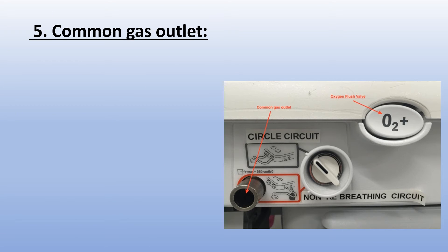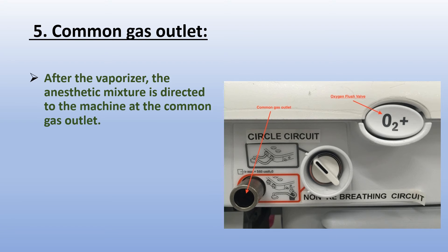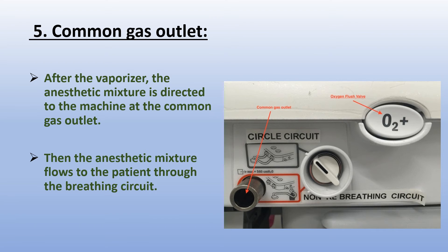The fifth component is the common gas outlet. After the vaporizer, the anesthetic mixture is directed to the machine at the common gas outlet. Then the anesthetic mixture flows to the patient through the breathing circuit.